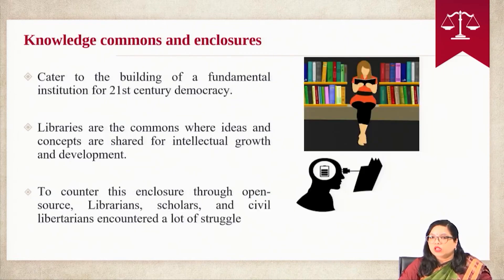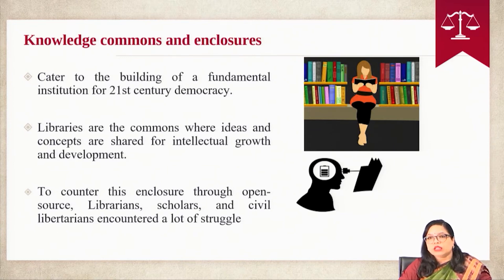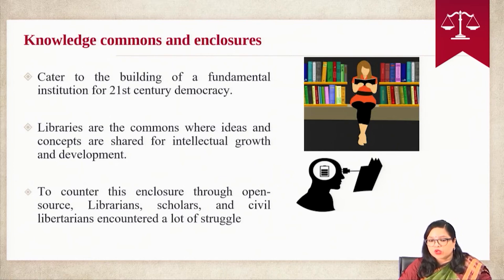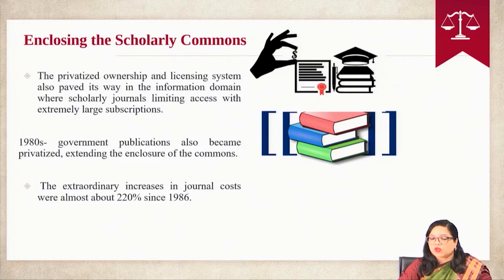The knowledge commons does not only counter the access-related challenges caused by enclosure formation, but also caters to the building of fundamental institutions for 21st century democracy. When we talk about the knowledge commons, libraries are the commons where ideas and concepts are shared for intellectual growth and development. To counter this enclosure through open source, librarians, scholars and civil libertarians encounter a lot of struggle. The privatized ownership and licensing system also paved its way in the information domain, where scholarly journals limit access with extremely large subscription fees, establishing enclosures on information by information proprietors.